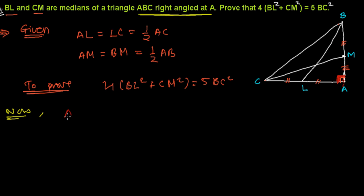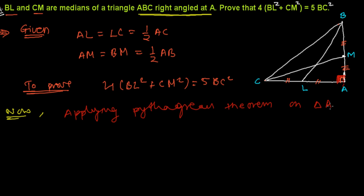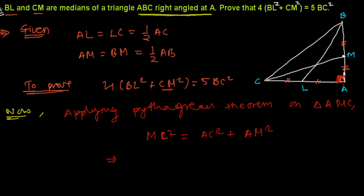Applying the Pythagorean theorem in triangle AMC, we get MC squared equals AC squared plus AM squared, since the hypotenuse squared equals the sum of the other two sides squared. So CM² = AC² + AM². Now, AC is fine as it relates to the bigger triangle, but AM needs to be converted in terms of AB.